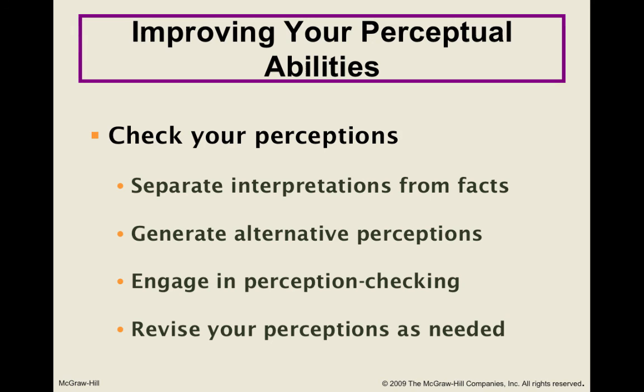We also need to check our perceptions for accuracy. Separate interpretations from facts — most of us accept our interpretations as facts, but that may not be the case; much of the time our facts are completely subjective. Generate alternative perceptions — try to come up with other explanations for a person's behavior. How much do you really know about this person or situation? Maybe what you think happened and what actually happened are two entirely different things. Engage in perception-checking behaviors: ask yourself if you could be wrong, and directly or indirectly find out through questions, listening, and observation. Be okay with revising your perceptions as necessary — most of us hate being wrong and stick to our perceptions stubbornly, but nobody learns anything that way.